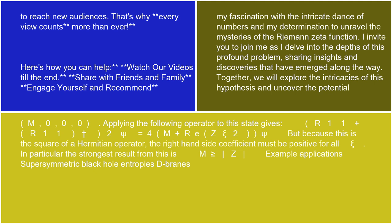In particular, the strongest result from this is M ≥ |Z|. Example applications include supersymmetric black hole entropies and D-branes.